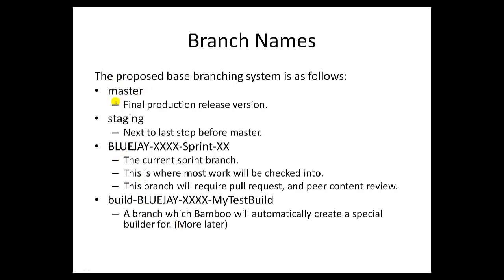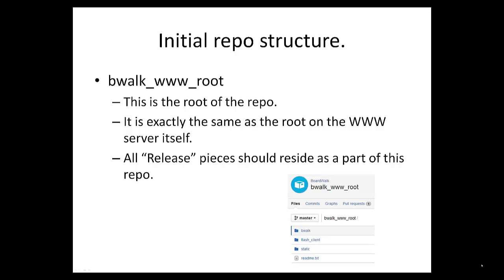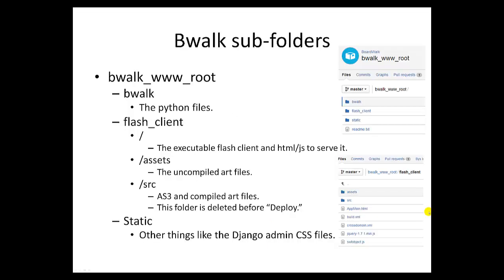In these first phases, you'll probably be working with our initial repo structure. We've created a bwoc www root, which is exactly the same as the root of the web server itself. All release pieces should reside as part of this repo. Within our repo we have subfolders. Under bwoc www root, we have bwoc, flash client, and static. Bwoc is where the Python files reside. Flash client contains several other subfolders — the root contains the executable Flash client and HTML and JavaScript to serve it, assets contain the uncompiled art files, and source contains AS3 and compiled art files. This folder is deleted before deployment. Other things like the Django admin CSS files are all contained in the static folder.